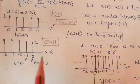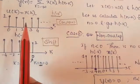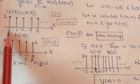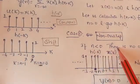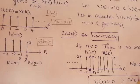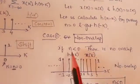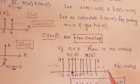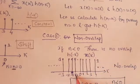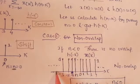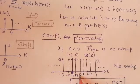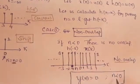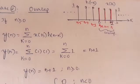We place the second signal over the first signal such that there is no overlap. When n < 0, there is no overlap. The first signal X(k) spans from 0 onwards, and placing the reference point at any position less than 0 results in no overlap. Hence Y(n) = 0 for n < 0.